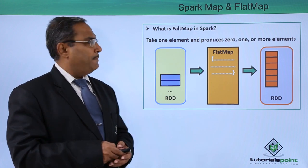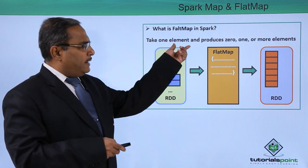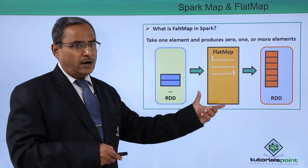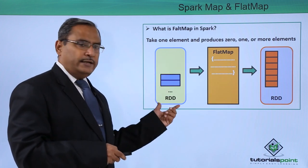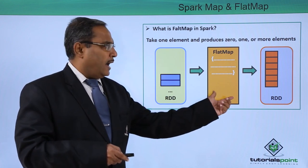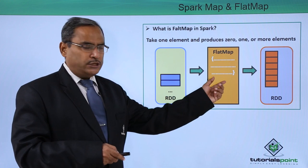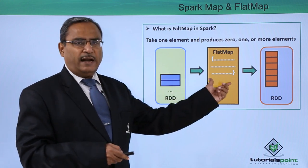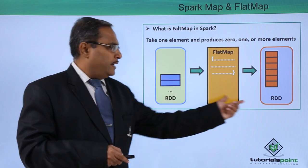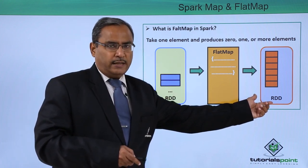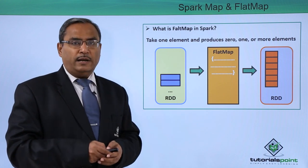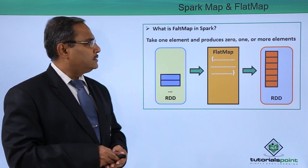Now let us discuss flat map. It takes one element and produces 0, 1, or more elements as output. It is taking one RDD as input, the flat map operation is performed, and the user can mention the respective logic. After taking this input, the flat map operation will be done on the respective RDD and it produces another RDD as output, which may contain 0 elements, one element, or more than one element.